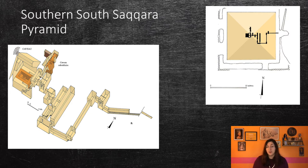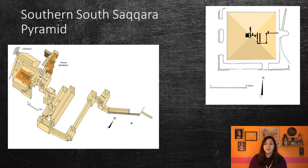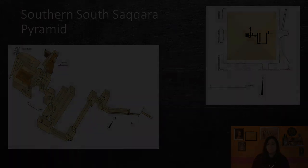There was no evidence of which 13th Dynasty king built this pyramid. Some scholars have proposed that this was the tomb of Imi Remeshaw, or even his successor Shatabkare Intef, while others have proposed the later wealthier kings, two of which I'm going to talk about now, although they have tombs that are tentatively associated with them.